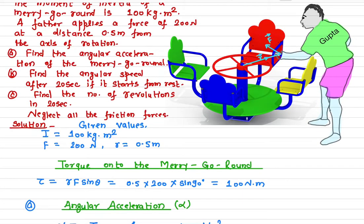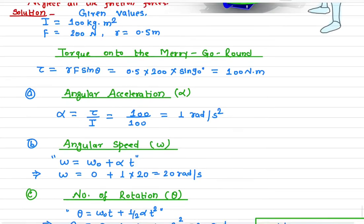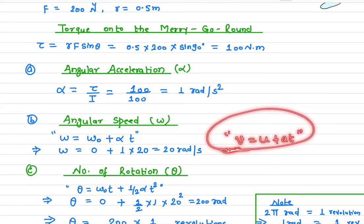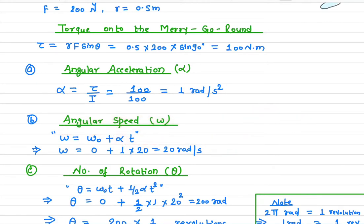Now let's find the angular speed, which is equivalent to finding linear speed in linear motion. We know that v = u + at for linear motion. In rotational terms, v becomes omega, u becomes omega-naught, and a becomes the angular acceleration alpha. There is a clear equivalency between linear and rotational motion equations.